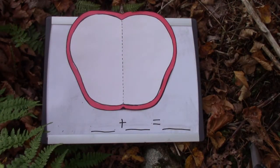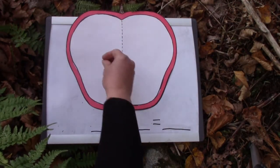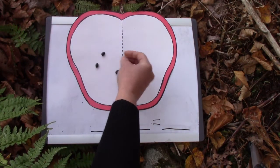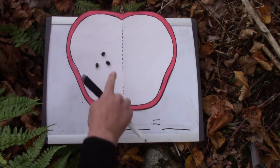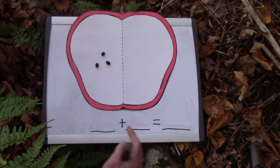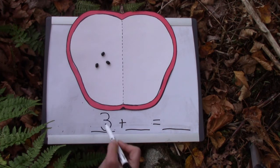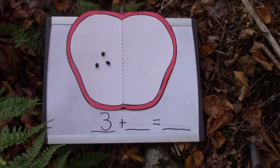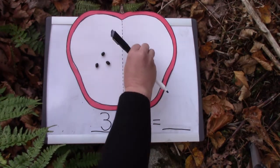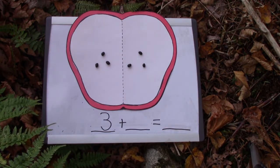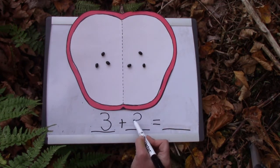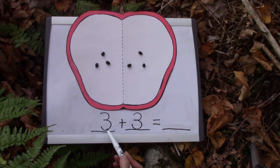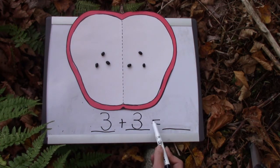Class we are going to be writing some number sentences. On my apple I'm going to put three seeds on this side. If I have three seeds on this side what am I going to put on my number sentence? Three. Now I'm adding to three. So I'm going to put my addition symbol. How many did I add? One, two, three. So I'm going to write down three on my number sentence. Three plus three equals.